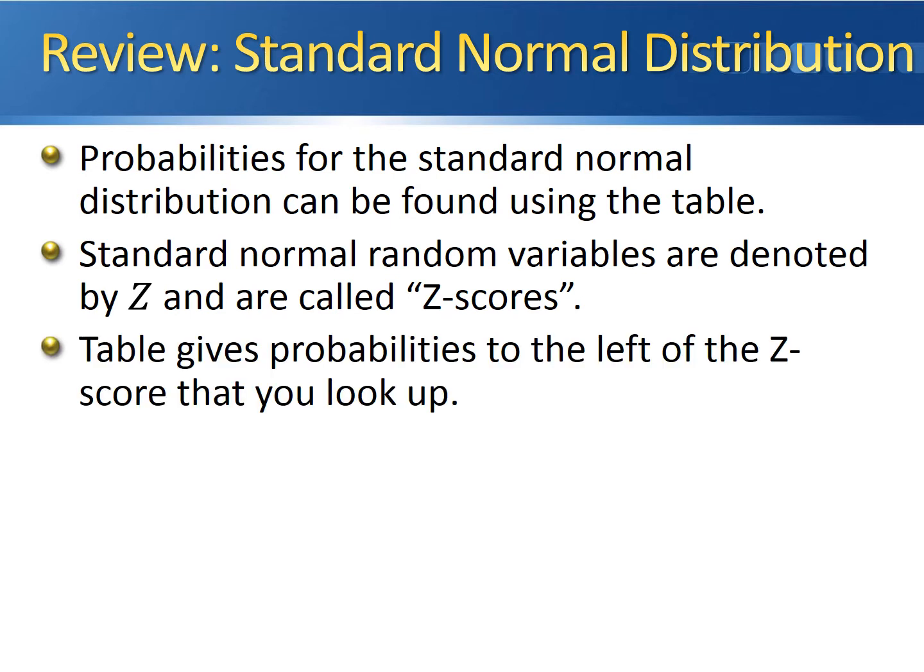In order to calculate these probabilities, you break up your Z-score into the ones and the tenths place — you look up that portion in the first column — and you look up the hundredths place in the top row, then intersect the row with the column.